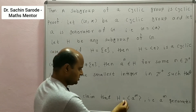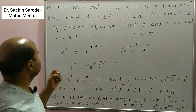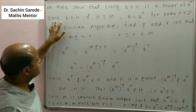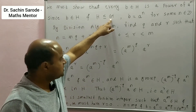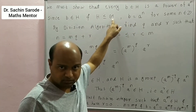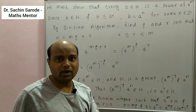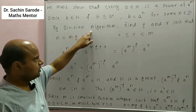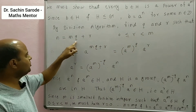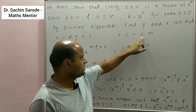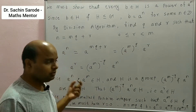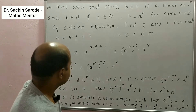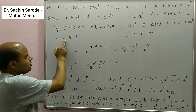We claim that A^M generates H, that is H is equal to the subgroup generated by A^M. We must show that every element B in H is a power of A^M. Since B is in H and H is a subgroup of G, therefore B must be in G. Since G is a cyclic group generated by A, therefore B = A^N for some N belonging to Z. By the division algorithm, we find Q and R such that N = MQ + R, where 0 ≤ R < M.